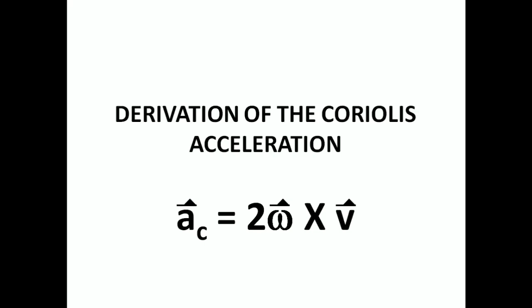The Coriolis acceleration is given by 2ω × v, where ω is the angular velocity and v is the radial velocity.